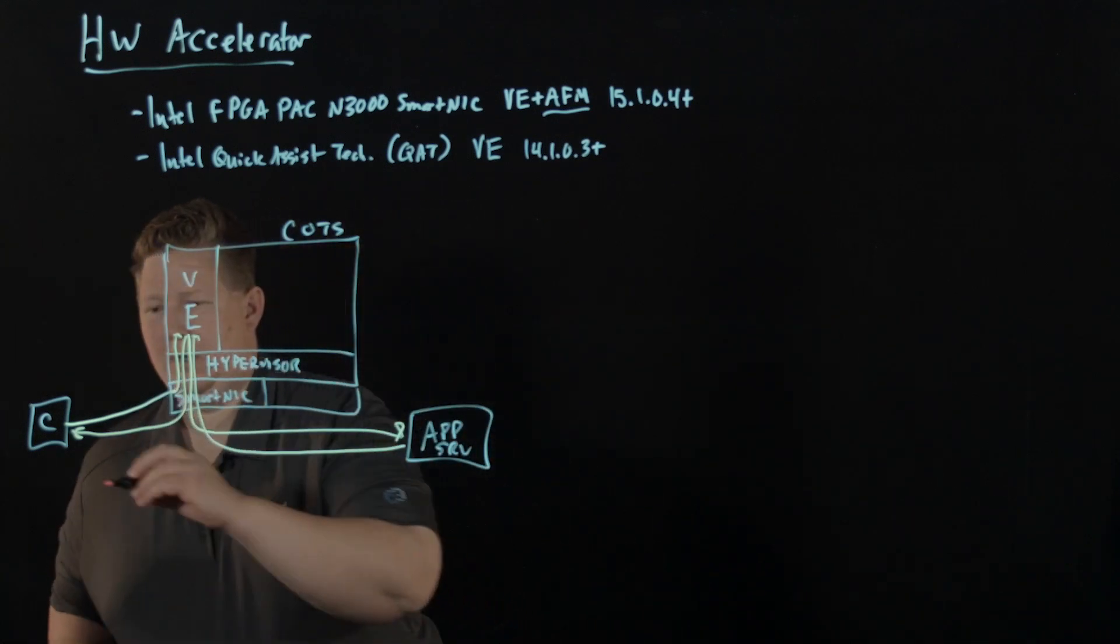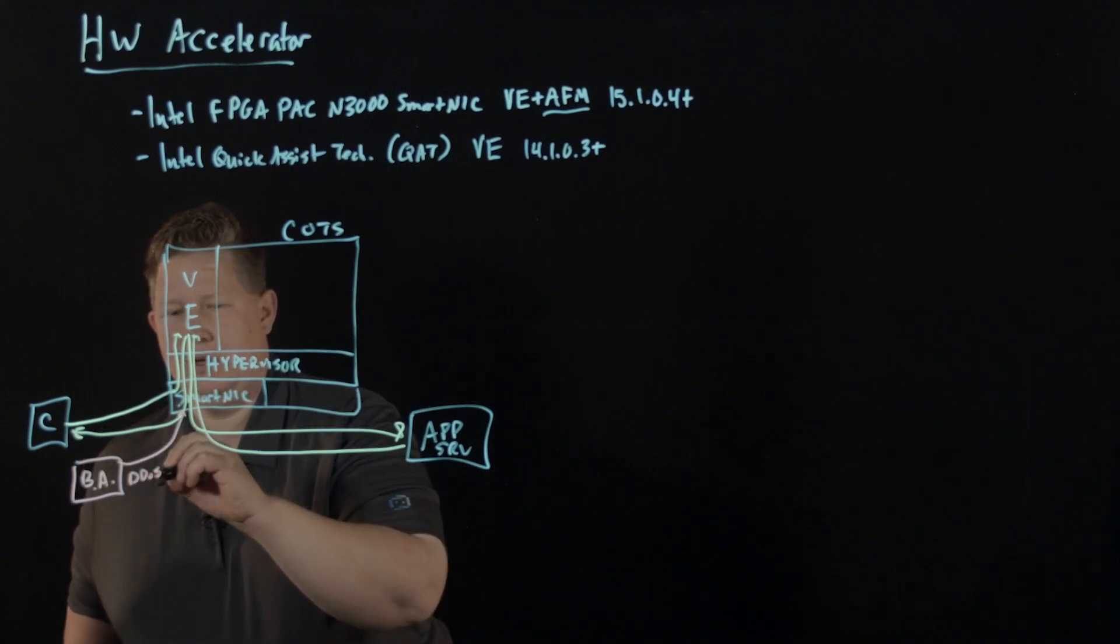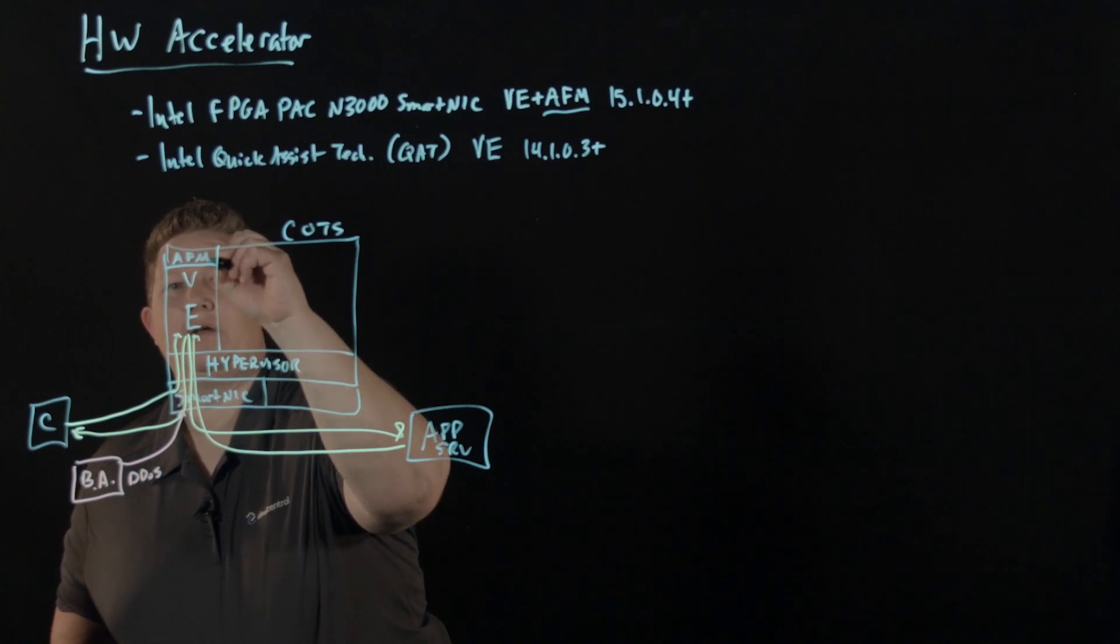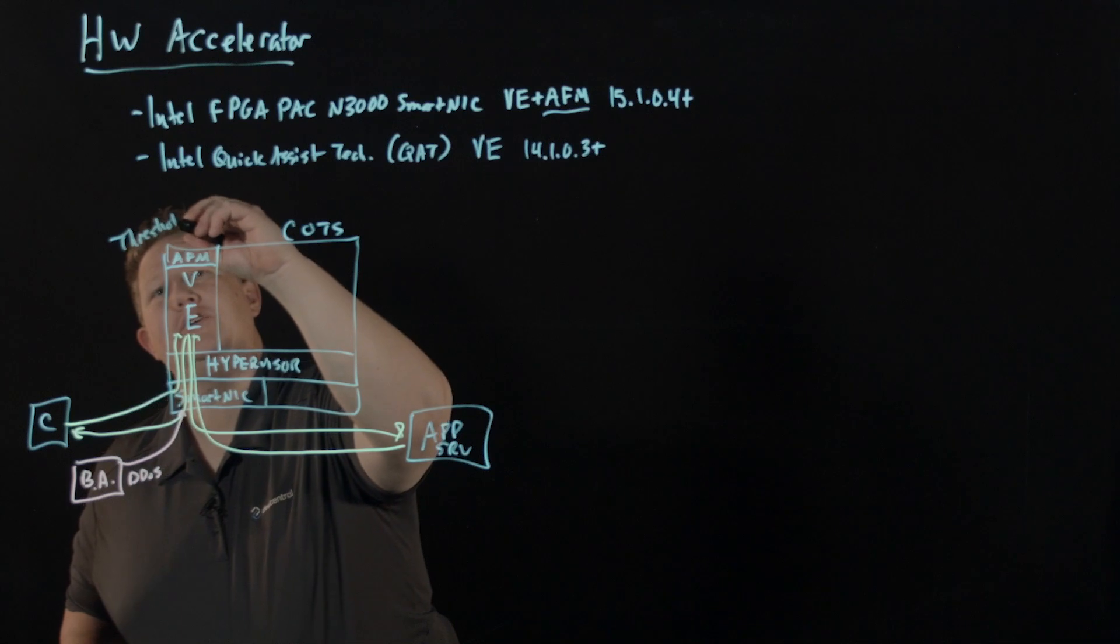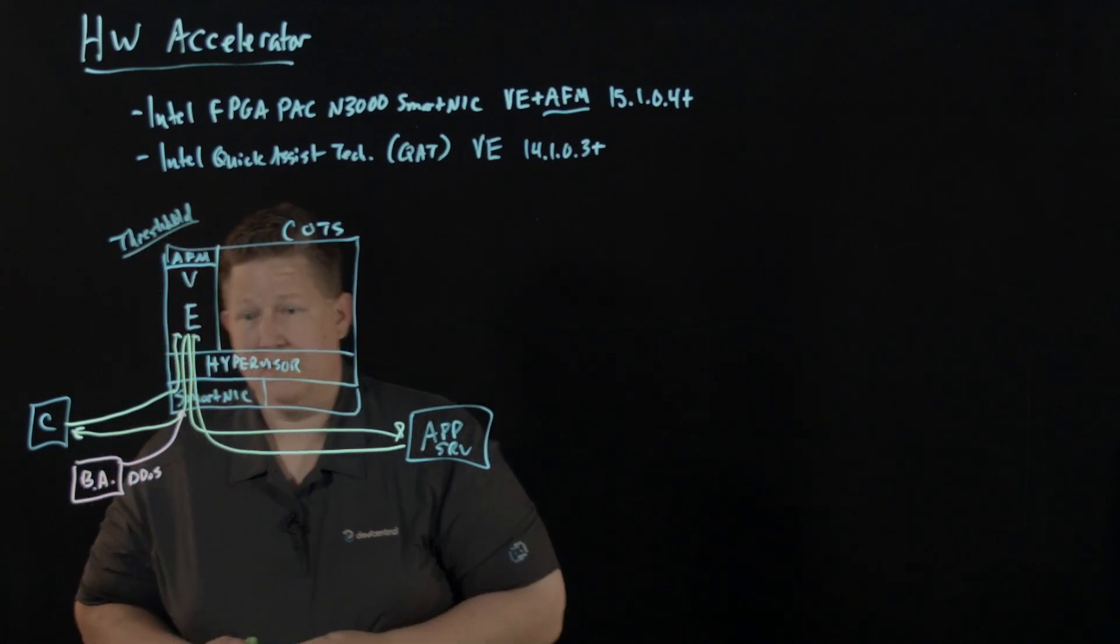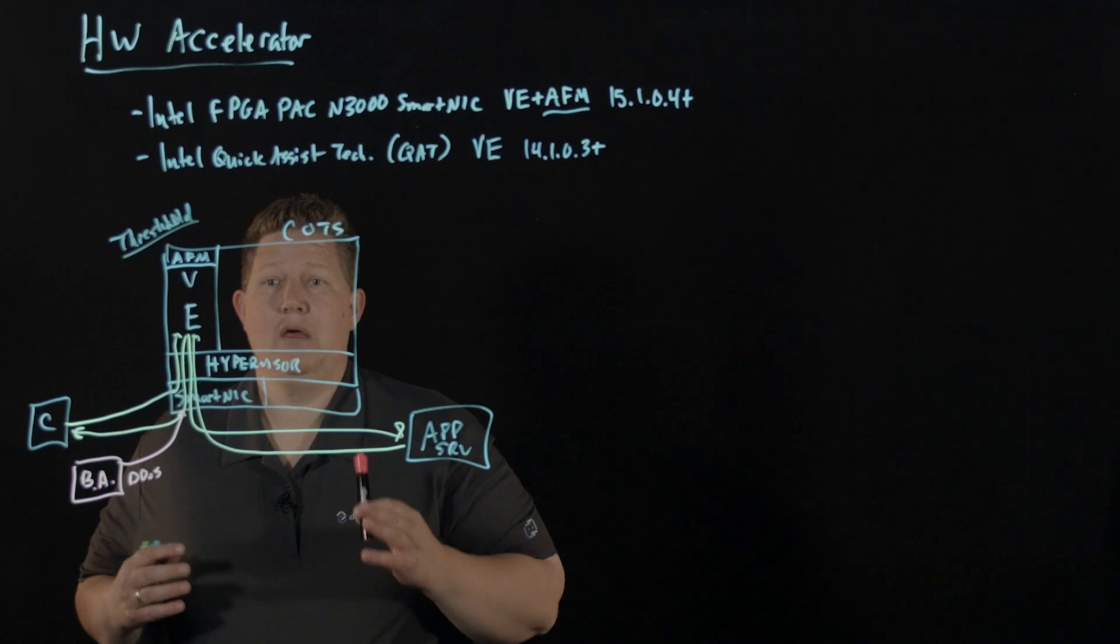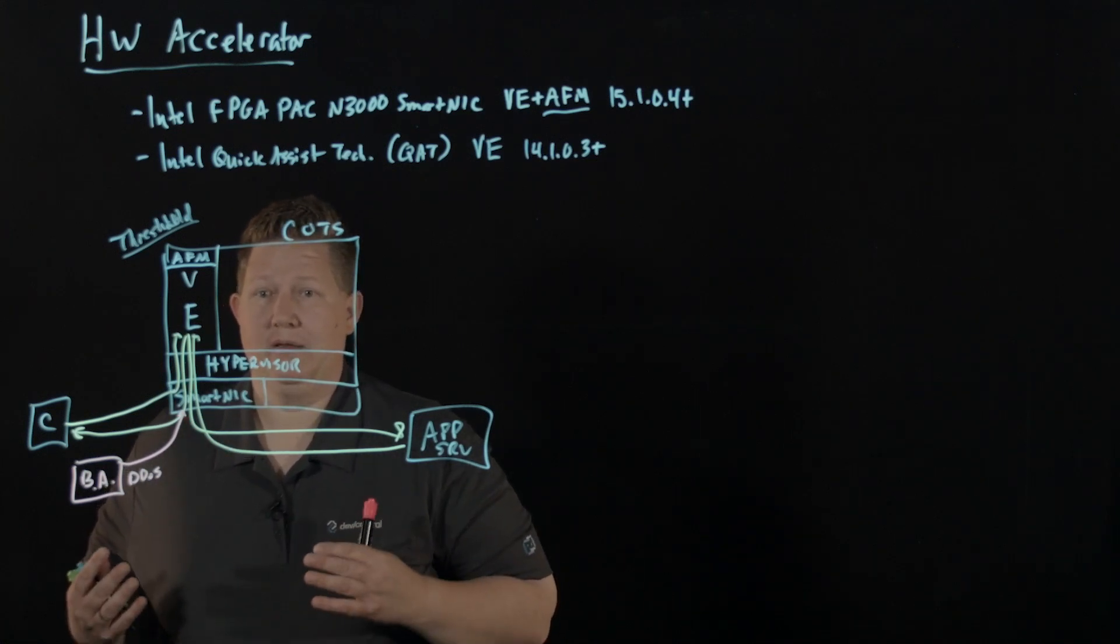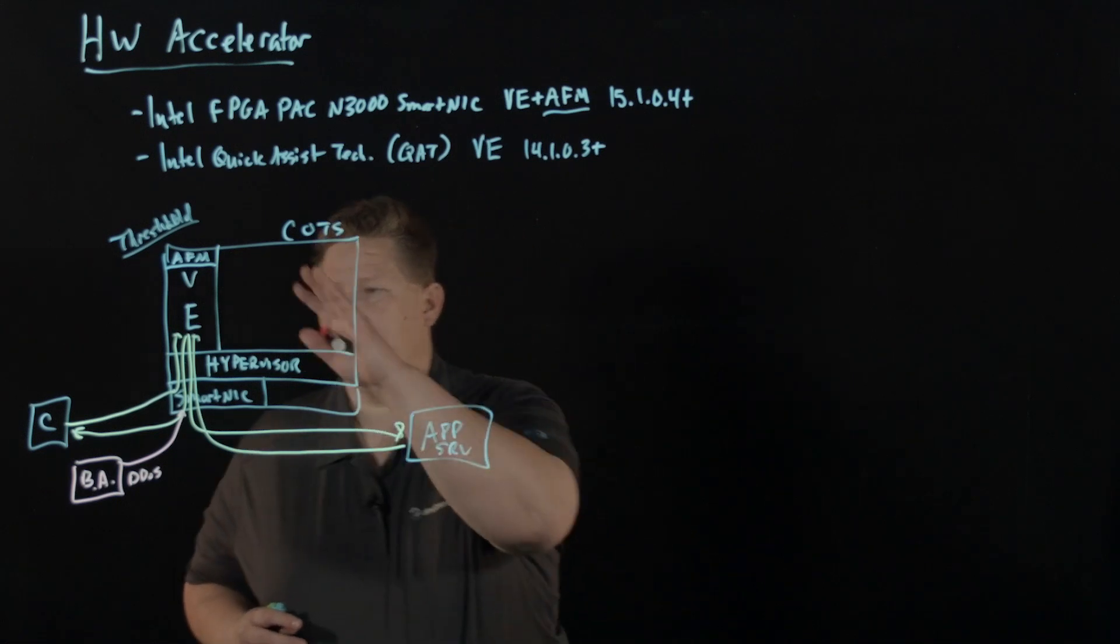Then we have Mr. Bad Actor here sending some DDoS traffic into the system. Now AFM, as it is a required component for this solution. AFM has a threshold defined for the amount of identified traffic, so AFM handles the thresholding of whatever the SmartNIC FPGA programming is going to detect and ultimately mitigate. And that mitigation can be done via dropping or rate limiting, really depends on what your settings are.